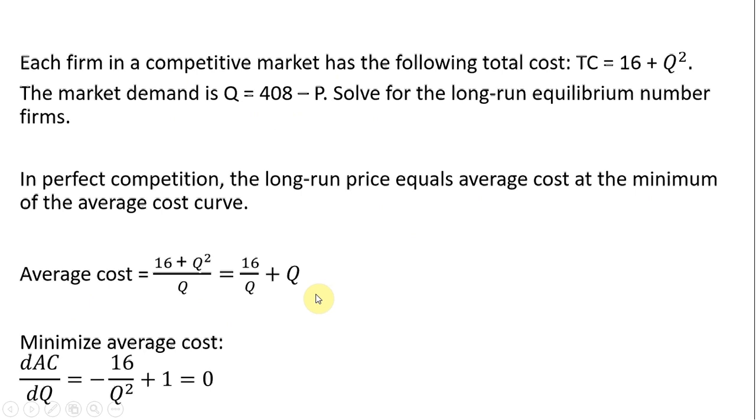We want to find the minimum point on the average cost curve. So we're going to take the derivative of average cost to get its slope function, and we'll set that slope function equal to zero. The derivative is a slope. Following the rules of differentiation, 16 divided by Q, using the quotient rule, is minus 16/Q squared as its derivative. The derivative of Q is just one. So that's the slope function. We want to set it equal to zero to find the minimum point.